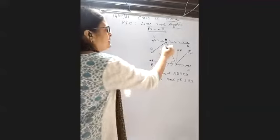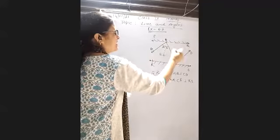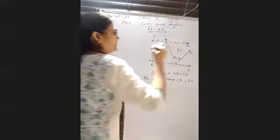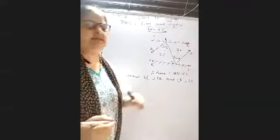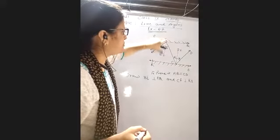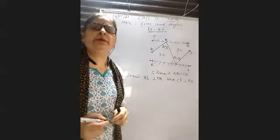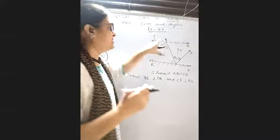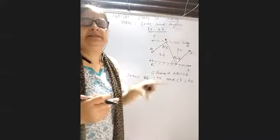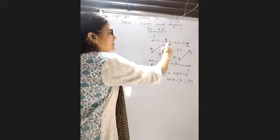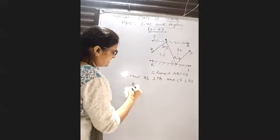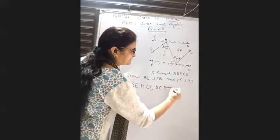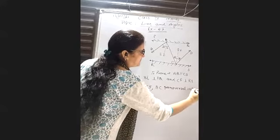From these perpendiculars, since the two parallel lines maintain the same distance everywhere, BE is parallel to CF. BC is the transversal intersecting them, forming alternate interior angles.